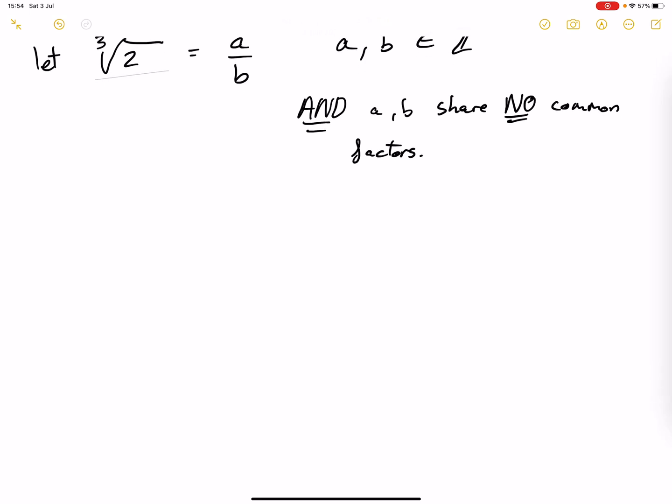So cube both sides. We get 2 is equal to A cubed over B cubed. Multiply: 2B cubed is equal to A cubed.